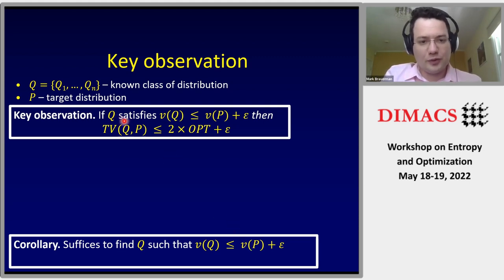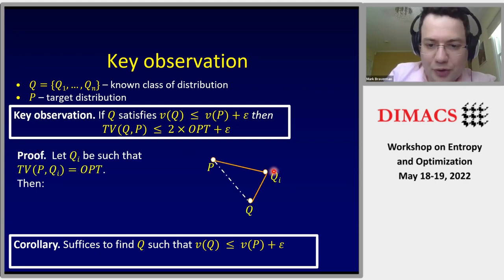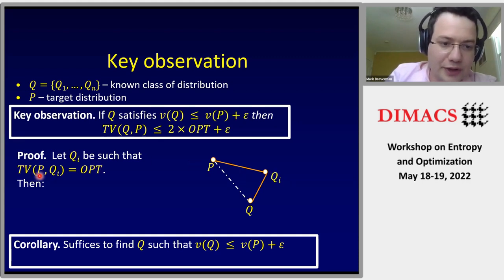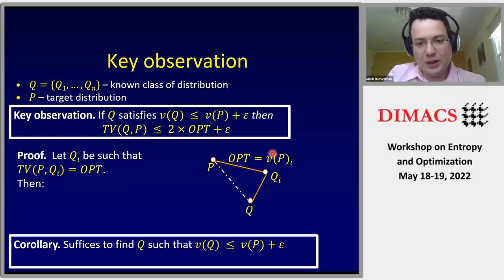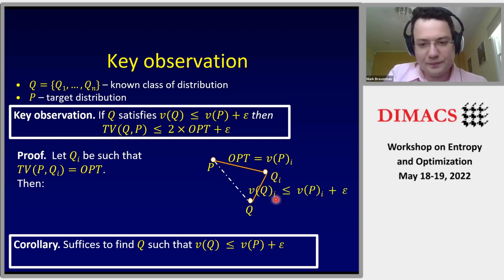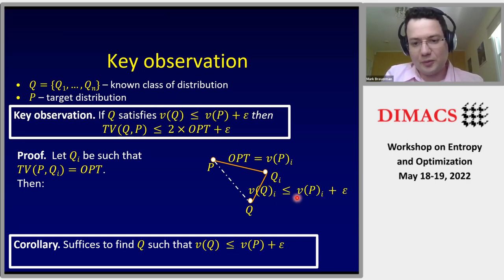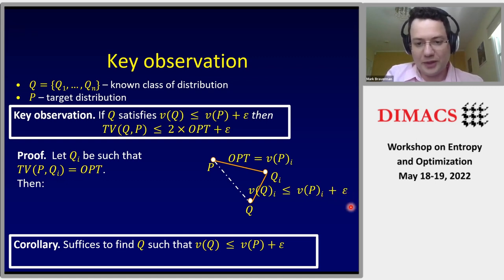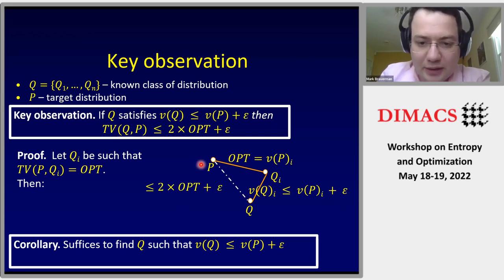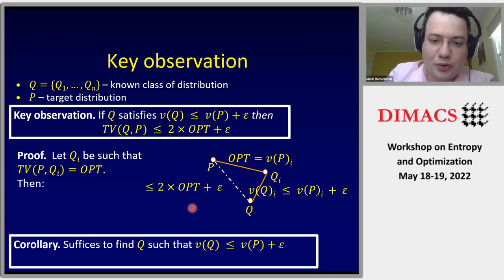Let's prove this key observation — it's a two-line proof. Suppose q_i is the point realizing the optimum, so the total variation of p and q_i is the optimal distance. The distance between q and q_i is at most v(p)_i + epsilon by the domination condition, which is at most opt + epsilon. By the triangle inequality, the distance between p and q is at most 2·opt + epsilon.